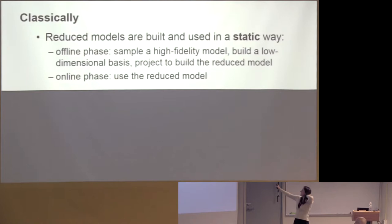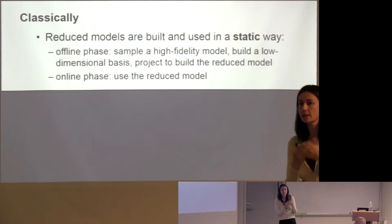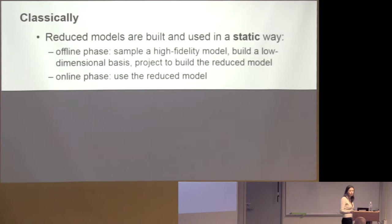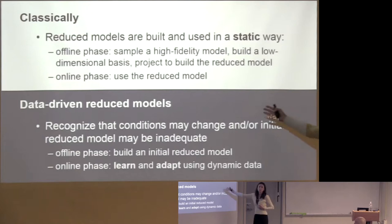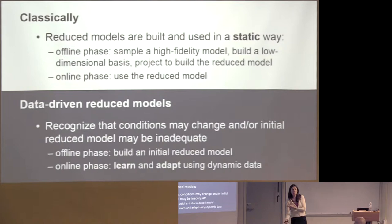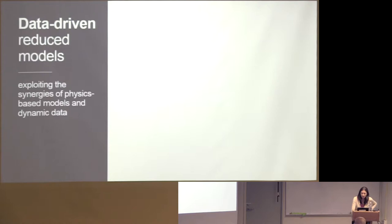One thing I wanted to talk about is adaptation. Classically, reduced models are built and used in a static way: in the offline phase I query my high-fidelity model, build V and W, do the projections, and hand you a reduced model. But we want to think about the case where data may be coming in — conditions may change. The wing may get damaged and the reduced model may no longer be good for those conditions. Can we build an initial reduced model but use the data to learn and adapt, evolving the reduced model using a dynamic data stream?